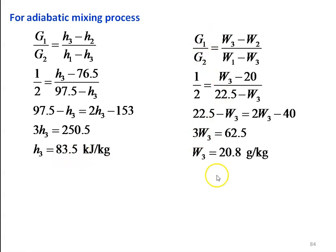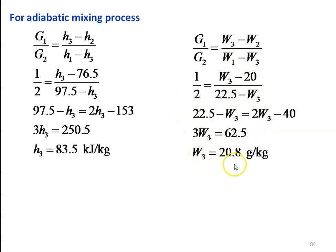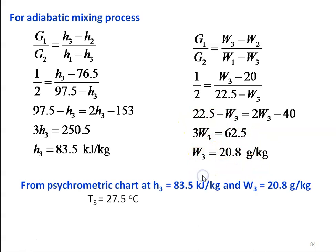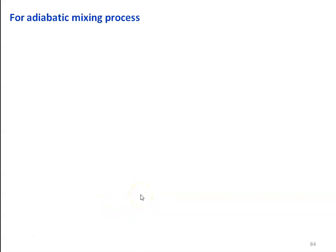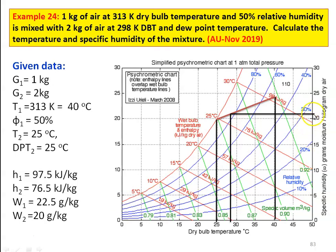Similarly, for specific humidity: G1/G2 = (W3 − W2) / (W1 − W3). Substituting: 1/2 = (W3 − 20) / (22.5 − W3). Cross-multiplying and solving, W3 = 20.8 g/kg. The corresponding temperature is 27.5°C. Locating the point for the calculated values on the psychrometric chart, the temperature is 27.5°C.